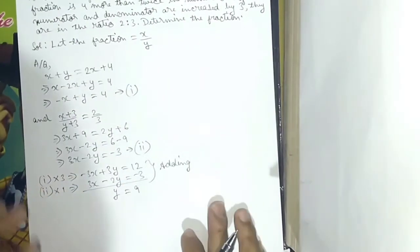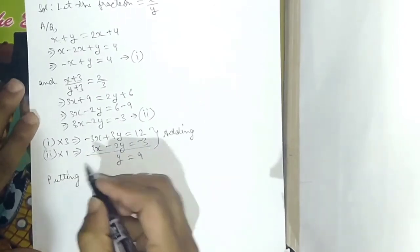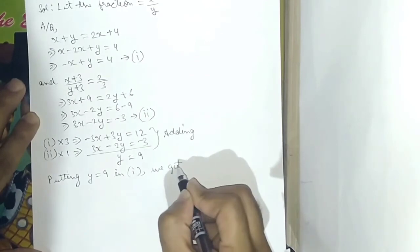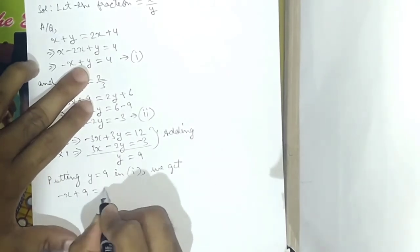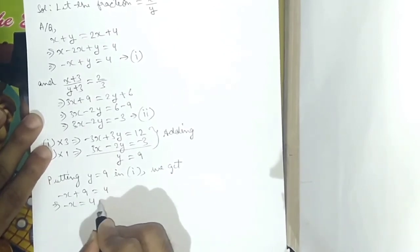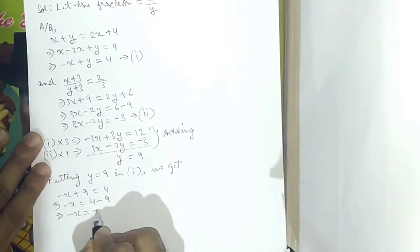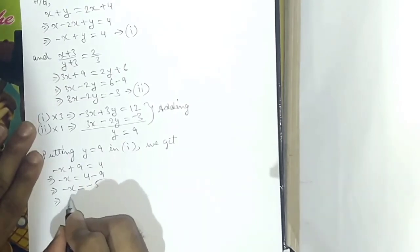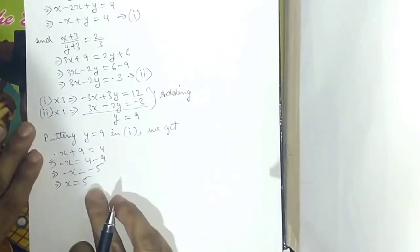Substituting y equals 9 into equation 1: minus x plus 9 equals 4. This implies minus x equals 4 minus 9, which is minus 5. The negatives cancel on both sides, giving x equals 5. So x equals 5 and y equals 9.